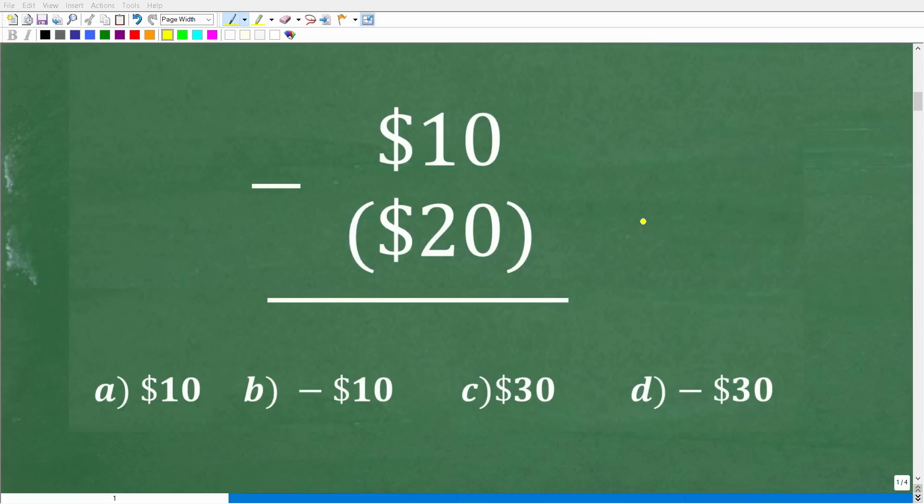Okay, so we can't solve this problem unless we understand what these parentheses mean right here. So we have $10 minus $20 in parentheses. So what does this mean? Well, this is where this basic accounting and your ability to read financial statements comes into play. Now, some of you might be saying, hey, Mr. YouTube Math Man, I never took accounting. Well, this is a very easy concept to understand. Matter of fact, let me go ahead and explain what these parentheses mean by this simple example.